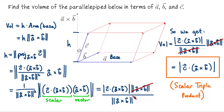That's how we use the cross product to compute areas of parallelograms and triangles in both R2 and R3, and the volume of a parallelepiped using the scalar triple product.